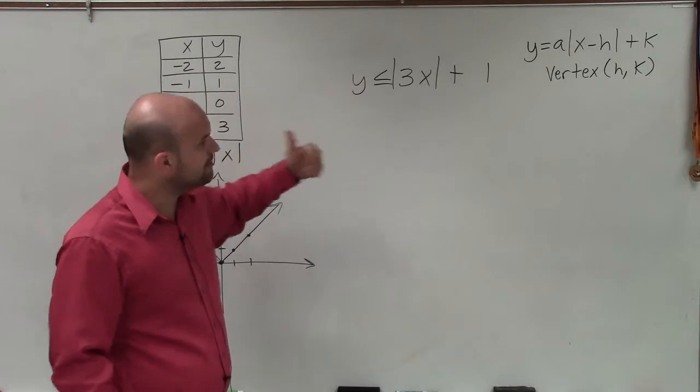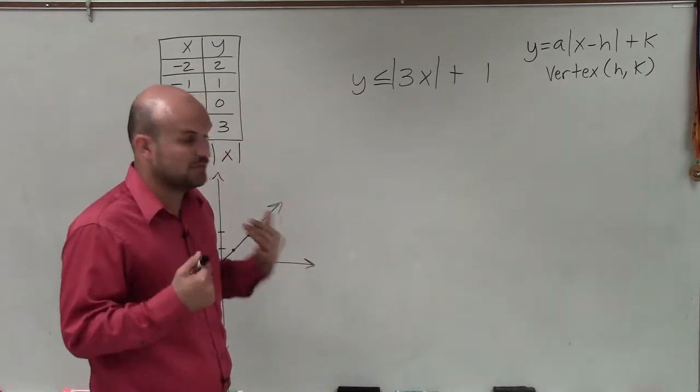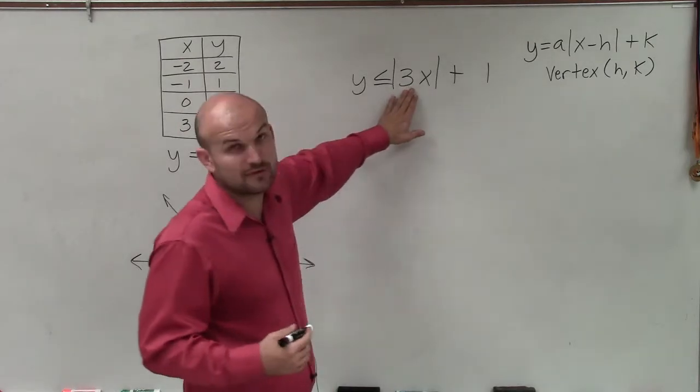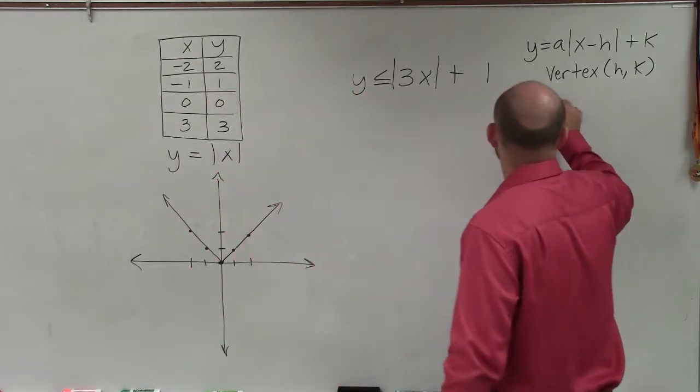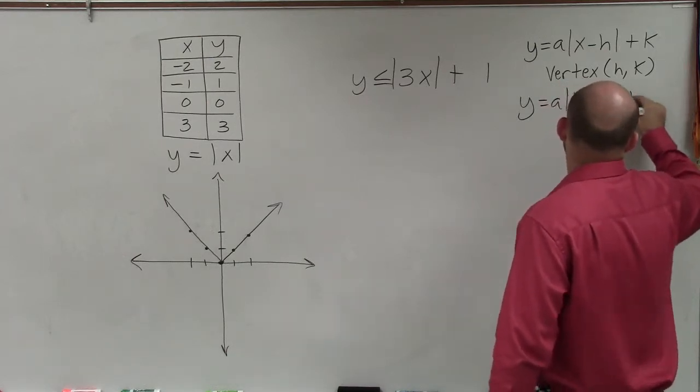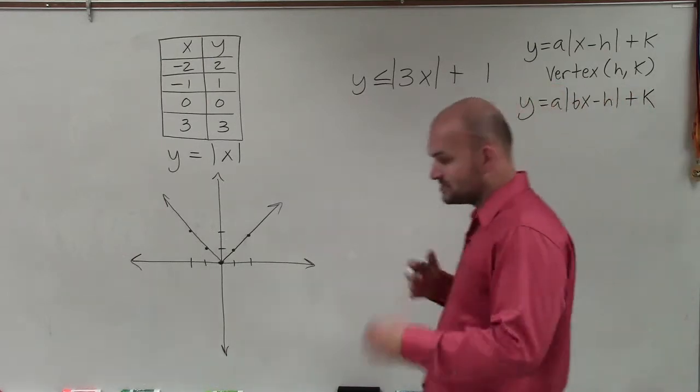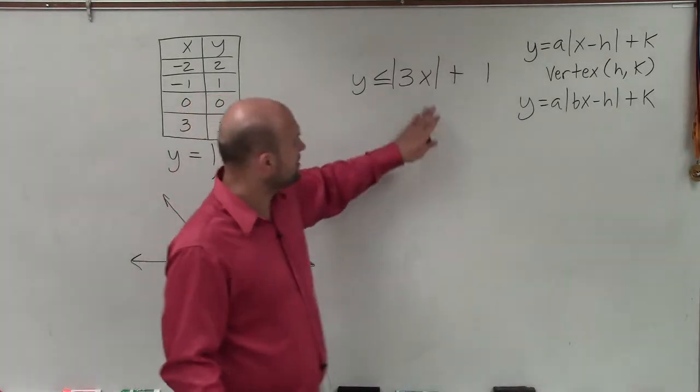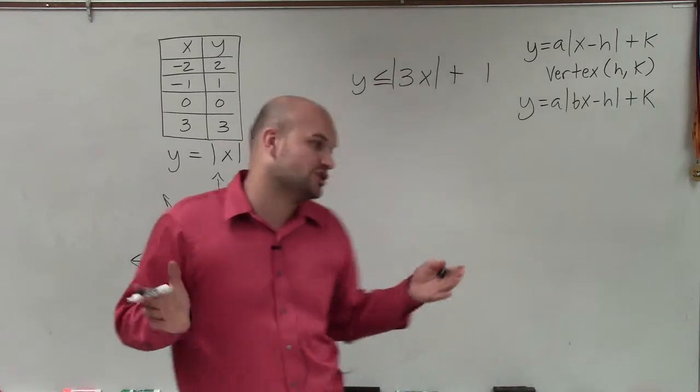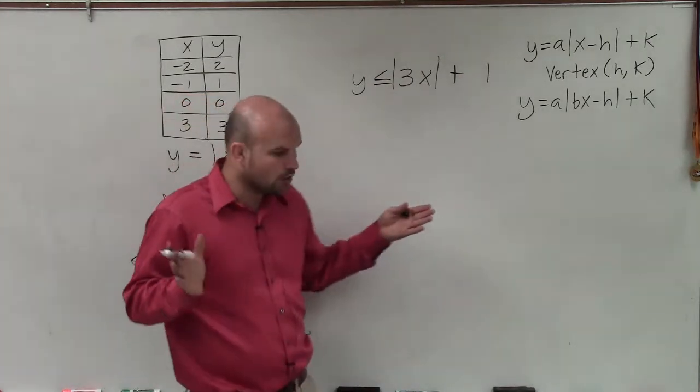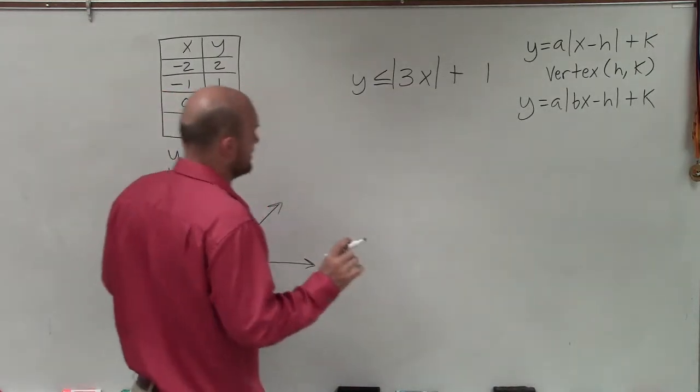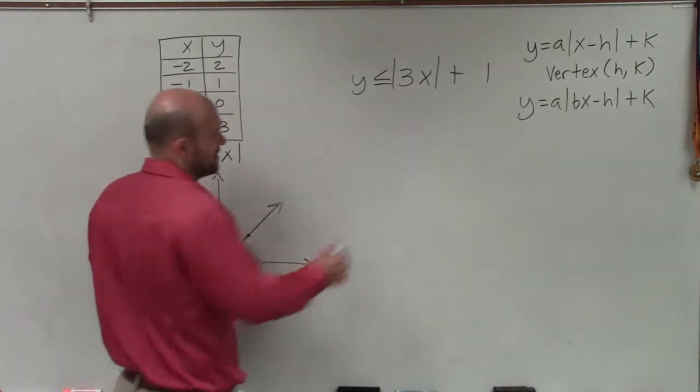So what we want to do a lot of times when we're graphing these is we want to be able to identify the transformation. Now, we can see here I have a 3 in front of the x. So that's actually going to be a different equation. But what you can see is this 3, what that's going to do is that is going to horizontally compress the way that our graph is going to look. So the first thing we want to do is there's a couple of different ways we can graph this.